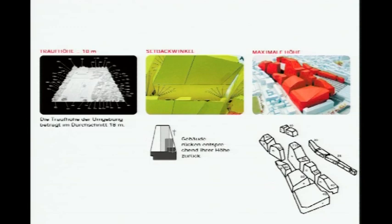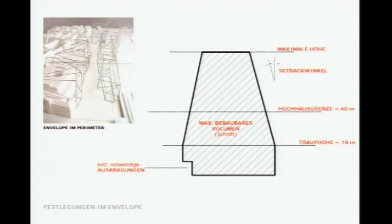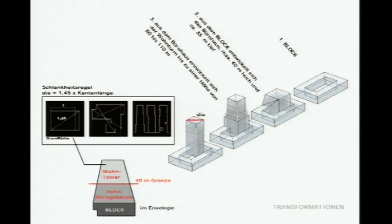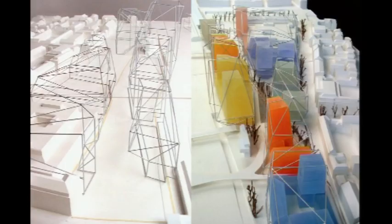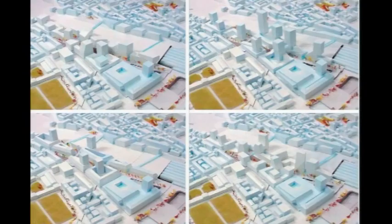We defined a certain section: you have this average height of 18 meters. The existing height is between 17 and 20 meters, so average 18. From there you have to tip back — high-rise can appear, but not on the direct edge of the block, the perimeter block. So that as a pedestrian, you always see only this existing city fabric, and the density will appear on top and tipped into the perimeter block.